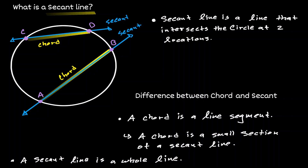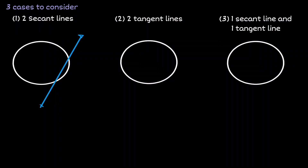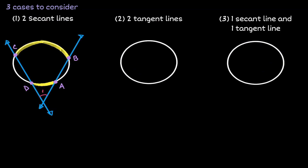What are some properties that secant lines have with circles? There are three cases to discuss. In the first case, we look at what happens when we have two secant lines in a circle. When the secant lines intersect, they create an angle — let's call this angle 1. We also create two arcs: arc DA and arc CB. For simplicity, let's call arc DA X and arc CB Y. The measurement of angle 1 is equivalent to one half times the difference of the arcs — the outer arc Y minus the inner arc X.